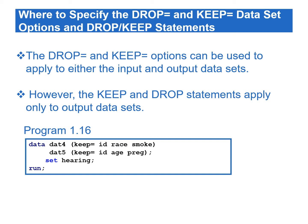Program 1.16 uses one data step to create two SAS data sets, DAT4 and DAT5. DAT4 is created by keeping only the id, race, and smoke variables, and DAT5 is created by keeping only the id, age, and preg variables. The KEEP= option is used to control which variables are kept after each data set name.